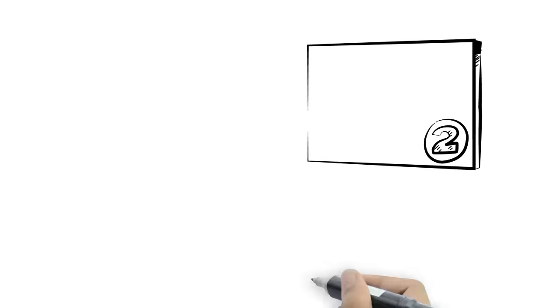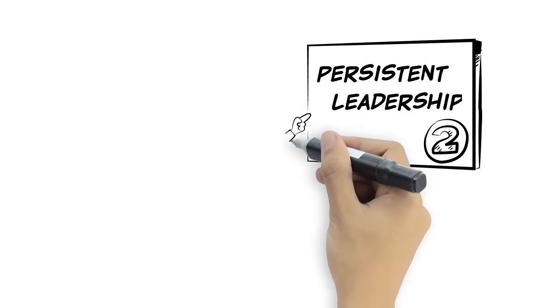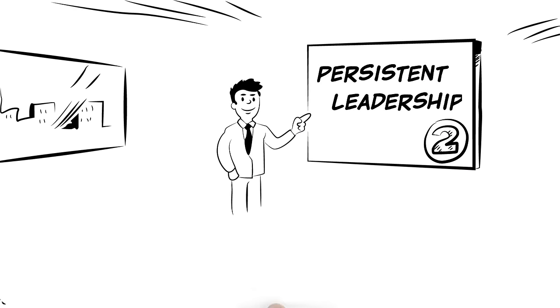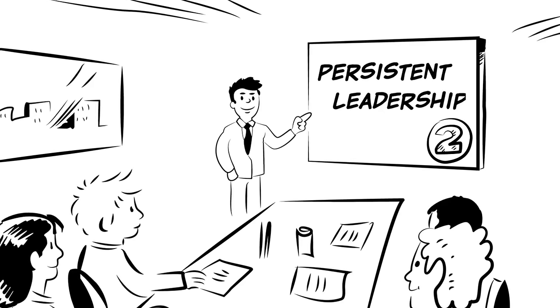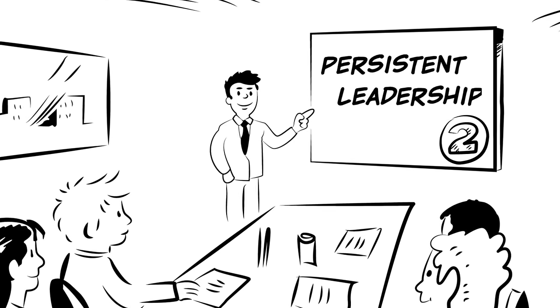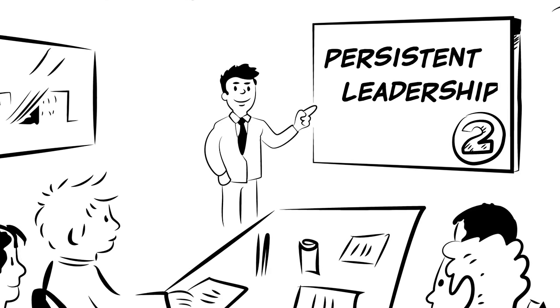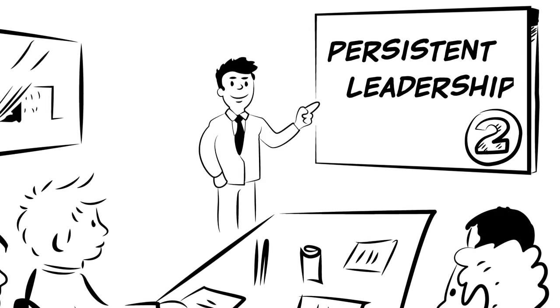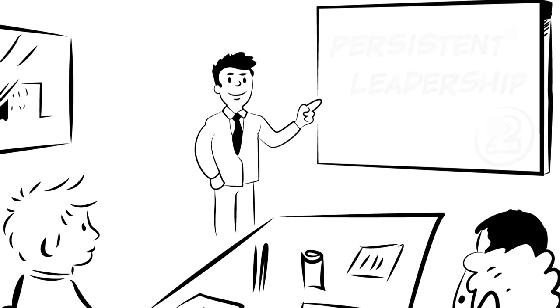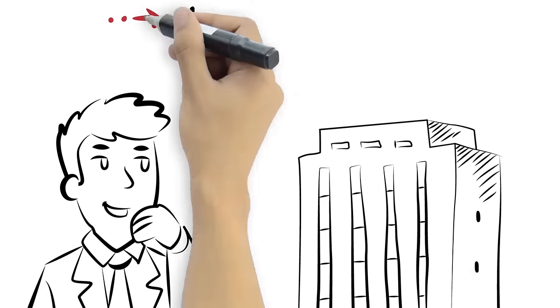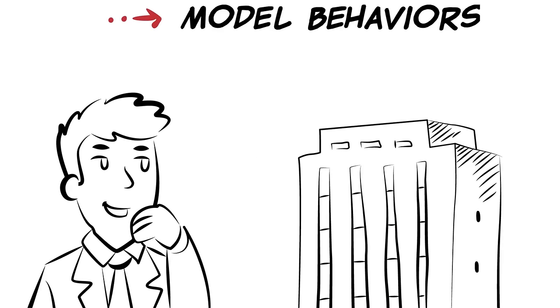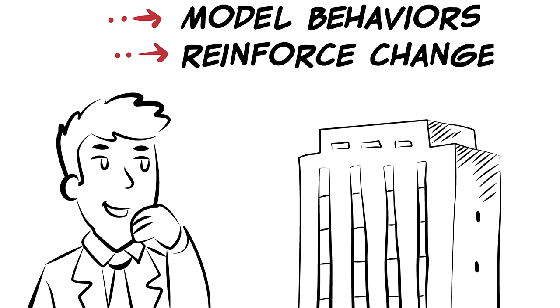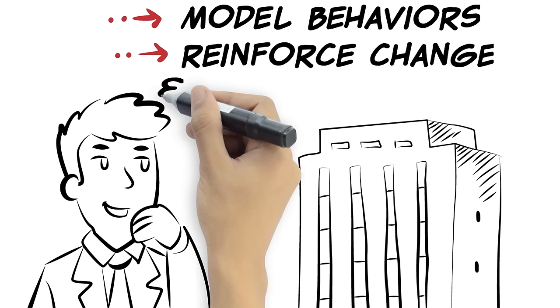The second practice is persistent leadership. The difference between success and failure of a change often comes down to the ongoing role that leaders play. Temkin Group explained that transformation leaders must demonstrate three characteristics. They must continually communicate why change is necessary. They must model the behaviors they want from the rest of the organization, and they must reinforce change by actively looking for and eliminating obstacles.